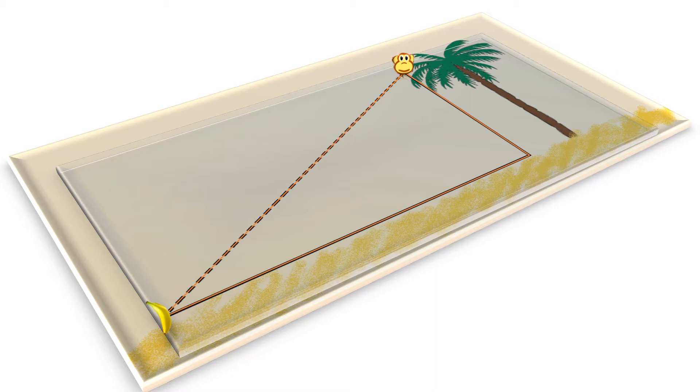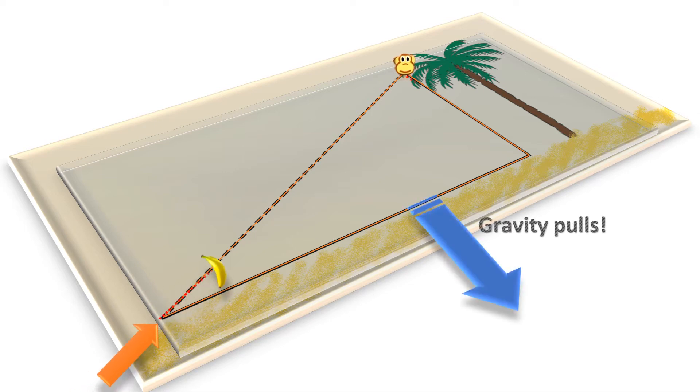Someone will shoot the banana, aiming along a straight line that goes directly toward the monkey. At that very moment, the monkey drops from the tree. Since the gravity is pulling everything downward, the monkey starts falling directly toward the ground.